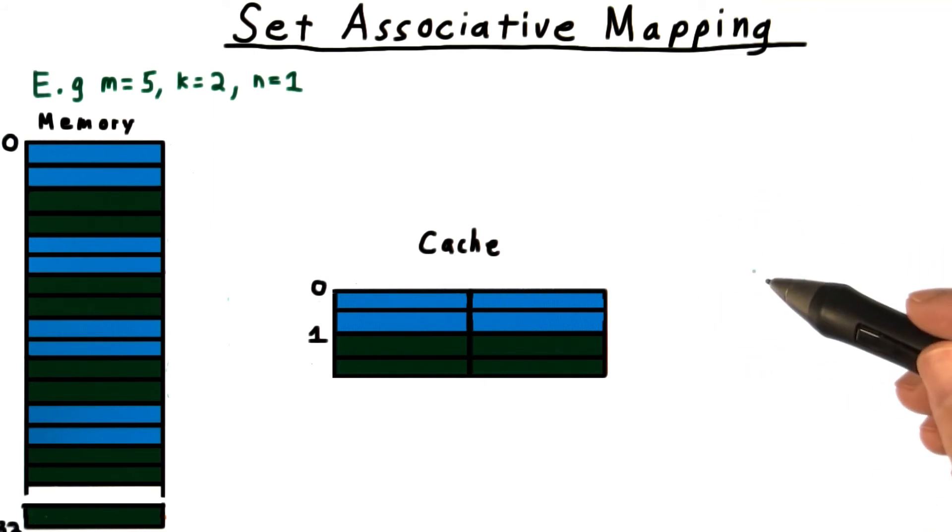If we decide this isn't good enough, we can halve the number of indices again to create a four-way associative cache.